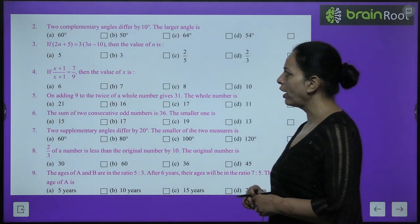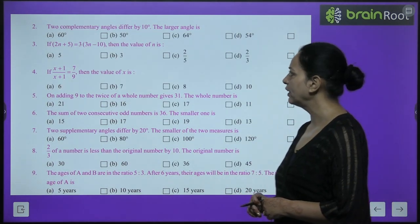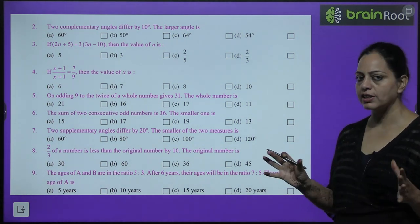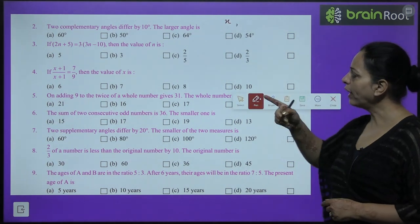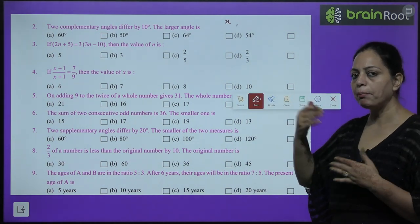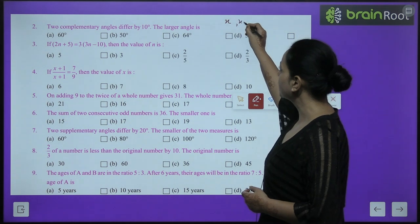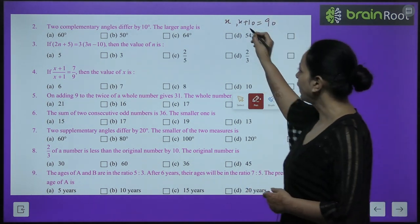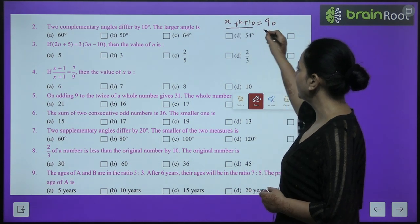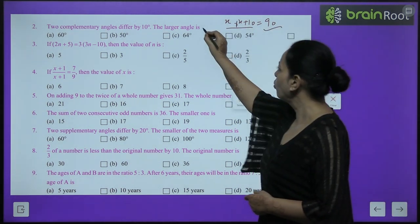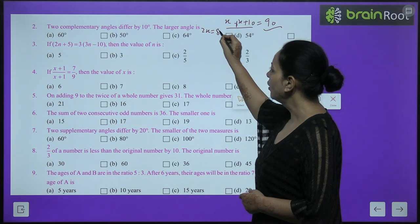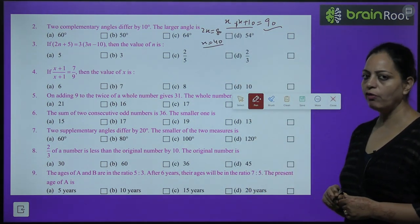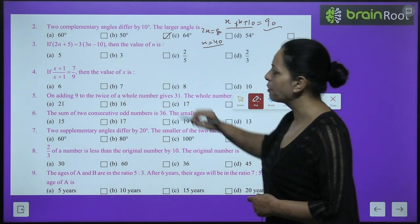Second MCQ: Two complementary angles differ by 10. Complementary angles sum to 90. Let one angle be x and other x plus 10. Then x plus x plus 10 equals 90, giving 2x equals 80, x equals 40. The larger angle is 50 degrees. Answer is B.